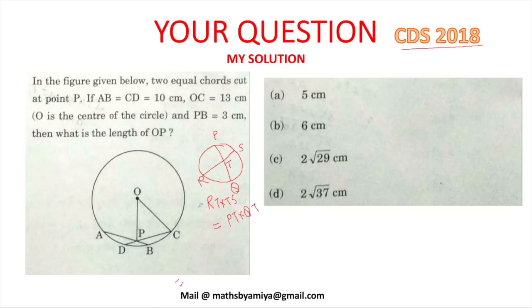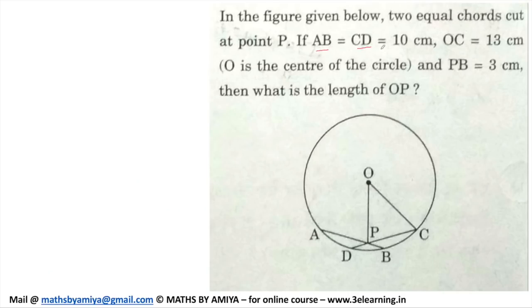Okay, so let us solve this question. In this, AB and CD are given 10 centimeter, OC is the radius given 13 centimeter, O is the center of circle, PB is given 3 centimeter. So we have PB given 3 centimeter, AB total is 10 centimeter. So we can say AP is nothing but 7 centimeter.